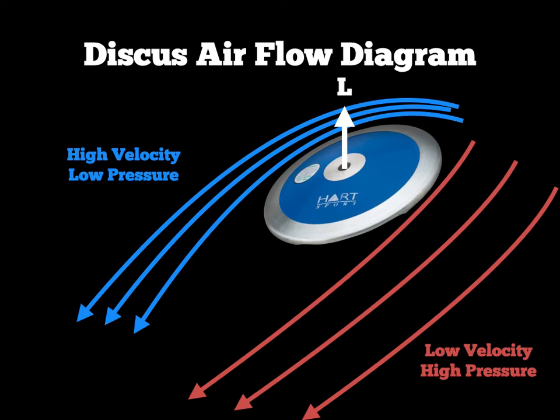That's how to draw an air flow diagram for a discus. For a javelin it's the same process: draw the javelin in, draw fast tight lines over the top, bigger-gap lines underneath, label high velocity low pressure above and low velocity high pressure below, and add your lift line upwards.